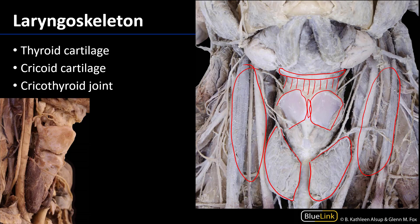The thyroid cartilage sits atop the cricoid cartilage, which I'm drawing in here — currently obscured by the cricothyroid muscles. Between the two we have the cricothyroid membrane, and this portion is the median cricothyroid membrane. This is the portion which is incised when one performs a cricothyroidotomy.